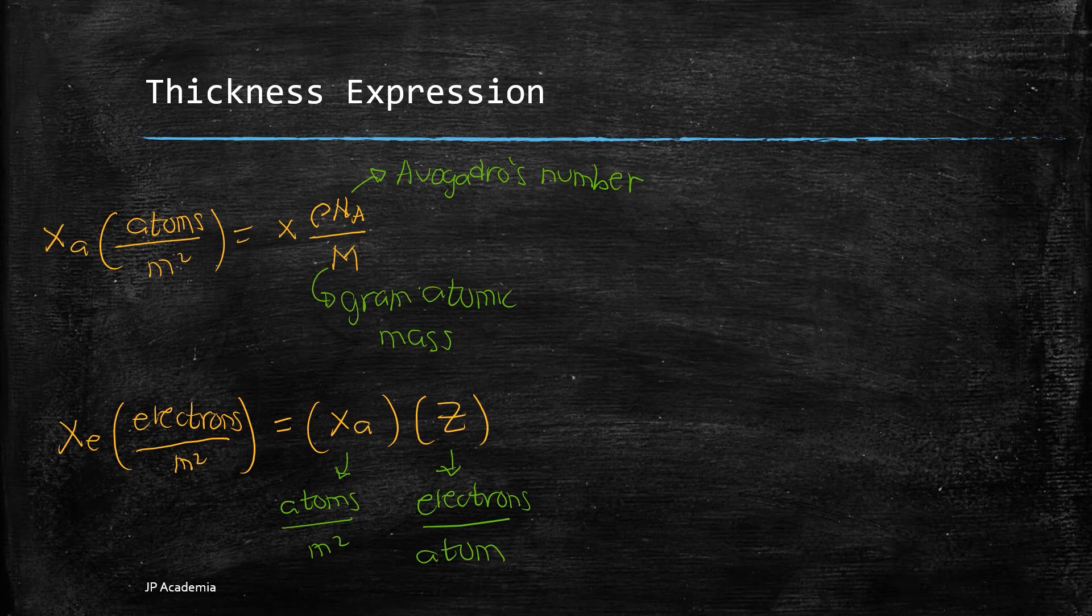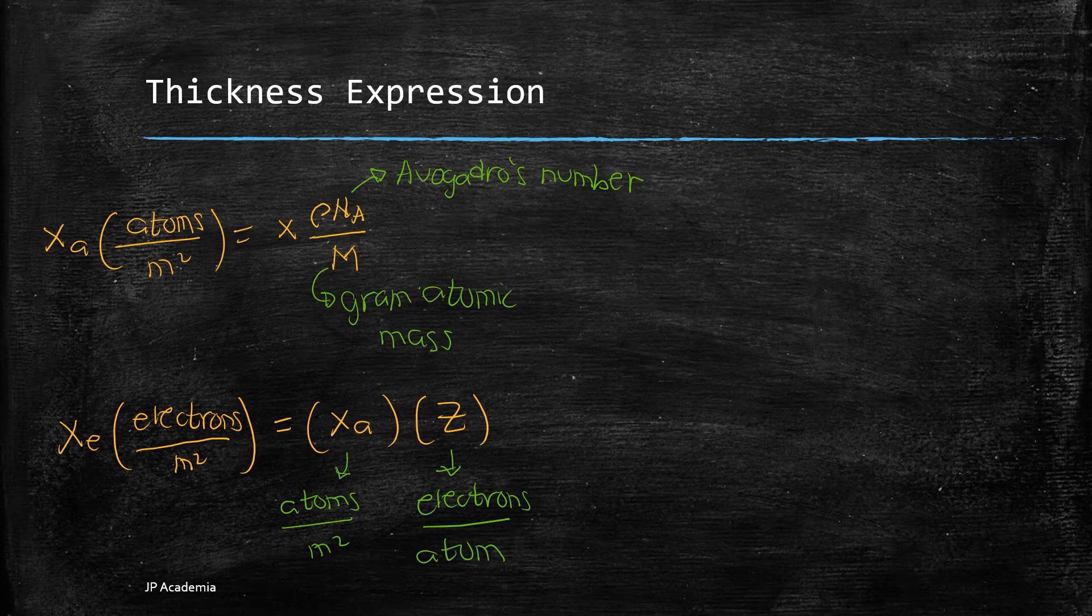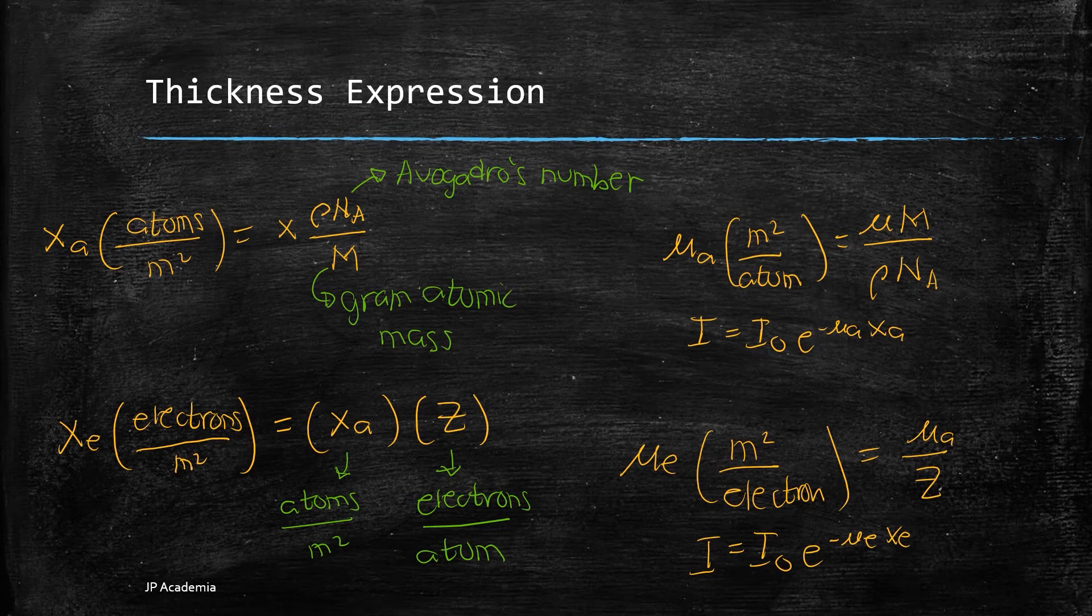Next, we have x sub e which is the number of electrons per square meter. And we have the atoms per square meter x sub a times the atomic number z. Using these thickness expressions, we can define total atomic or electronic attenuation coefficients mu as shown on the right.